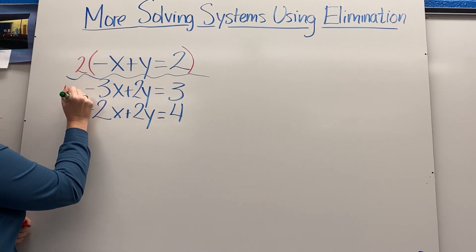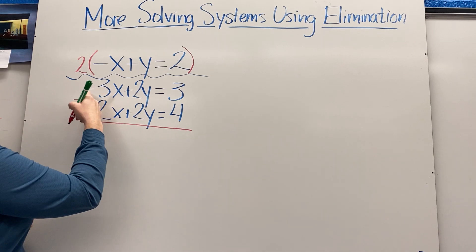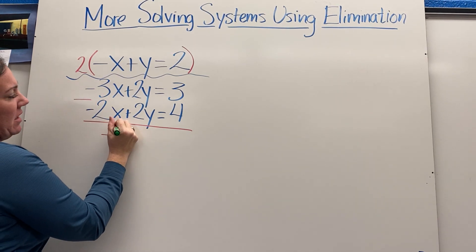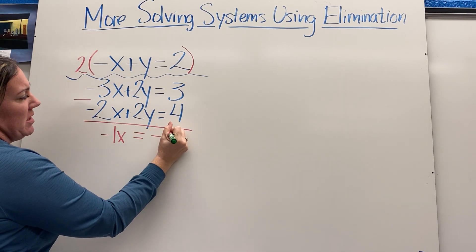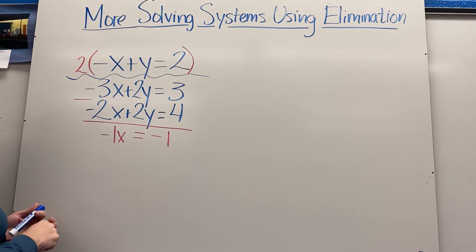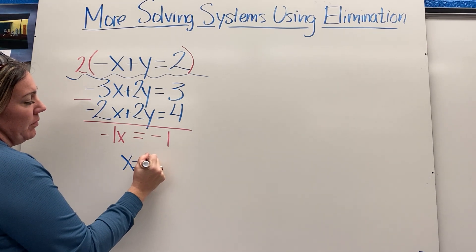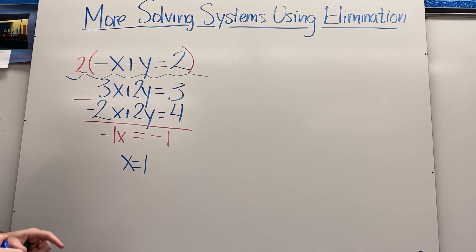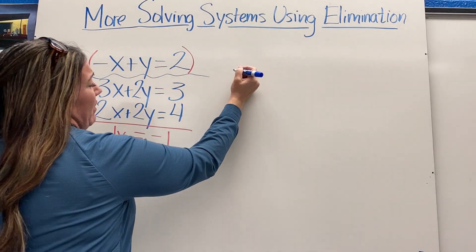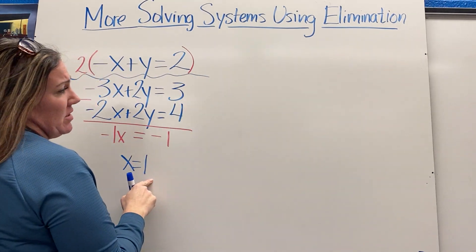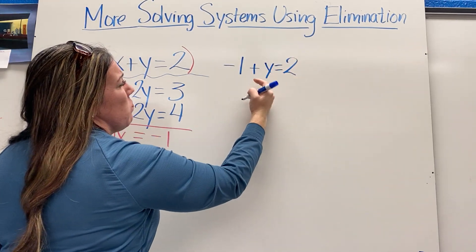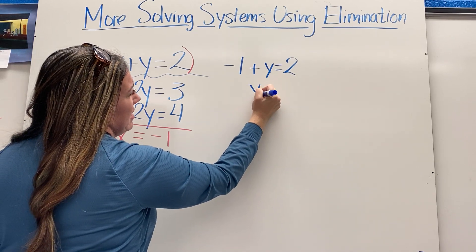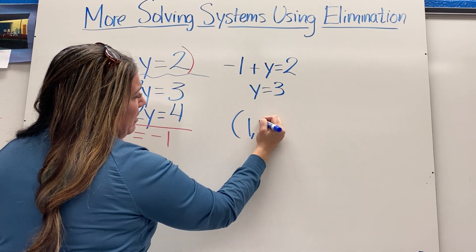Since the coefficients are the same, I'll subtract. Negative 3x minus negative 2x is negative 1x. 2y minus 2y cancels out. 3 minus 4 is negative 1, so x equals 1. I can plug that into the first equation: negative x plus y equals 2 becomes negative 1 plus y equals 2. Adding 1 to both sides gives y equals 3. So my answer is (1, 3).